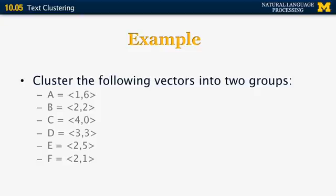Looking at document A (1,6): it should be obvious based on both Euclidean and Manhattan distance that it belongs to the second cluster centered at (6,6). Document B (2,2) is going to be closer to centroid (0,0). C (4,0) is also going to be closer to (0,0). D (3,3) is an interesting example because it's right in the middle between the two centroids, so we can ignore it in this round. E (2,5) is closer to (6,6) than to (0,0). Finally, F (2,1) is closer to (0,0) than to (6,6). So after the first half of the first iteration, documents B, C, and F belong to the cluster centered at (0,0), and documents A and E belong to the second cluster.